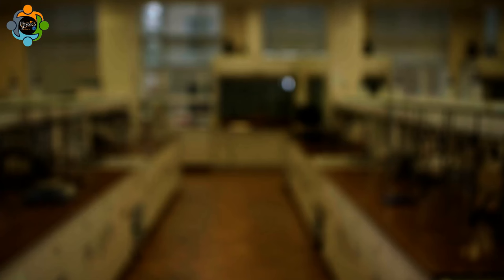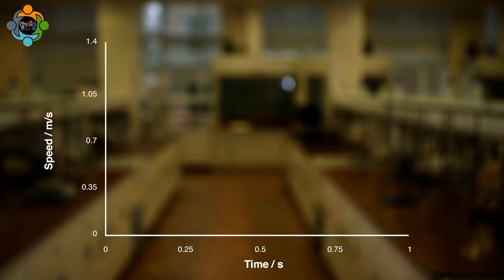The independent variable, which is time, is plotted along the horizontal axis. Speed is plotted on the vertical axis; this is the dependent variable. Now the data points from the experiment can be plotted.